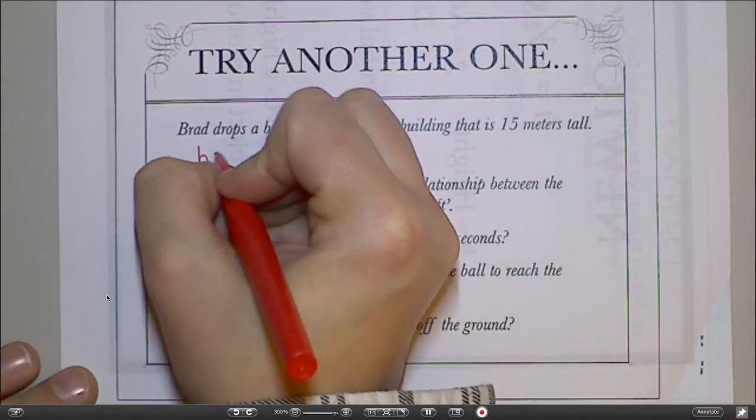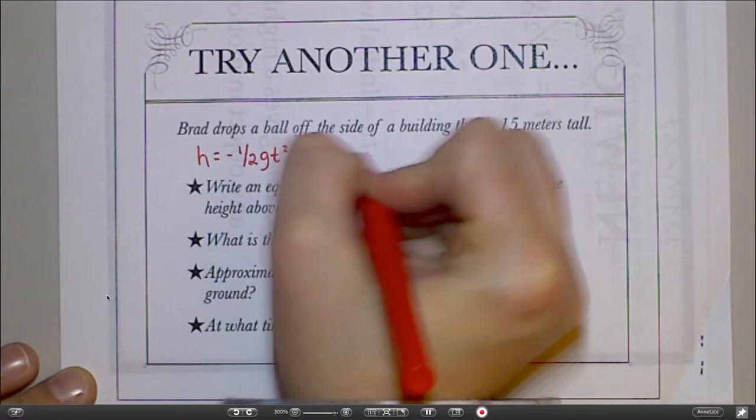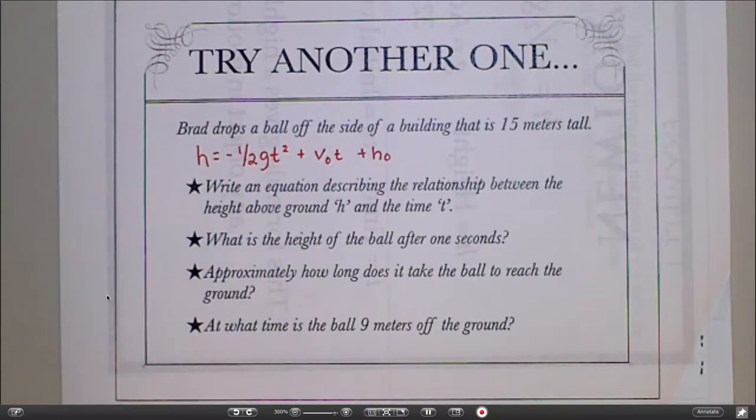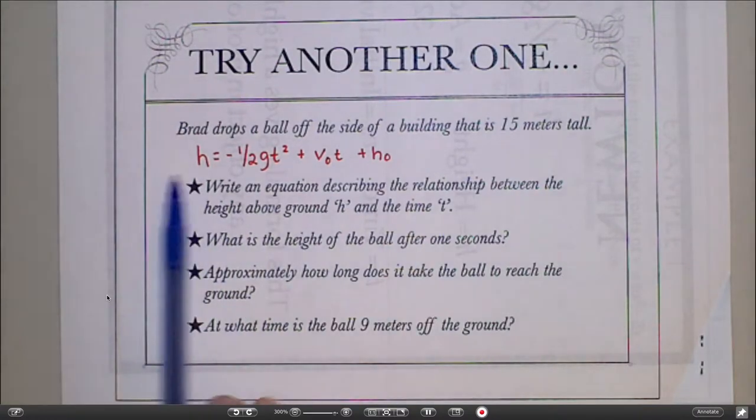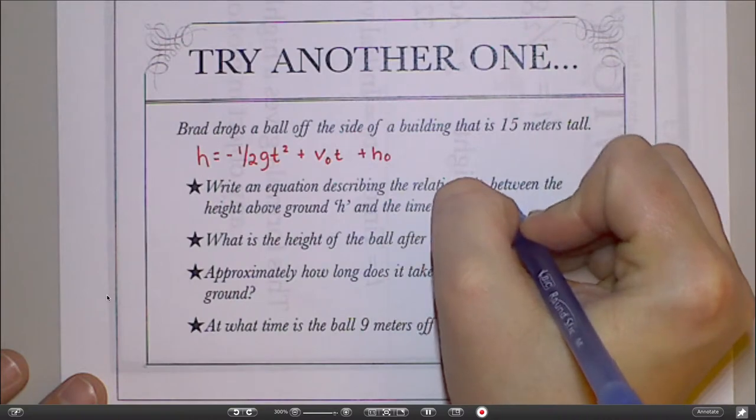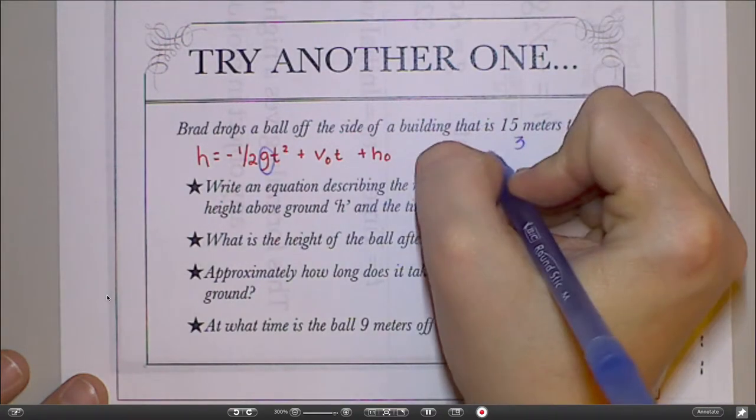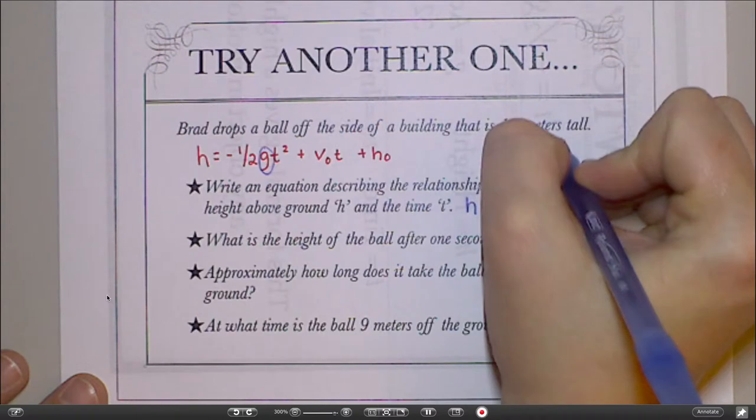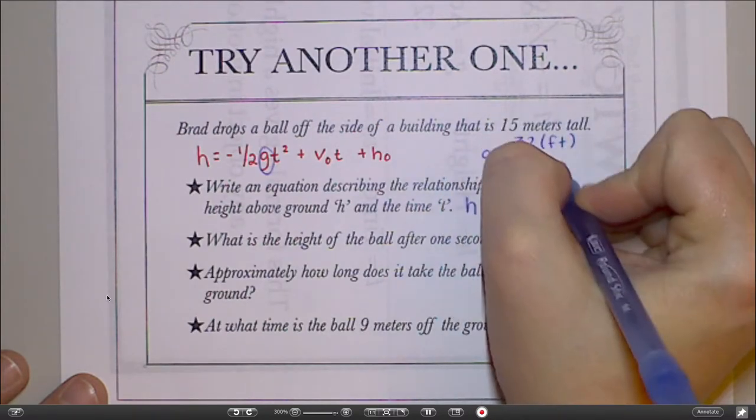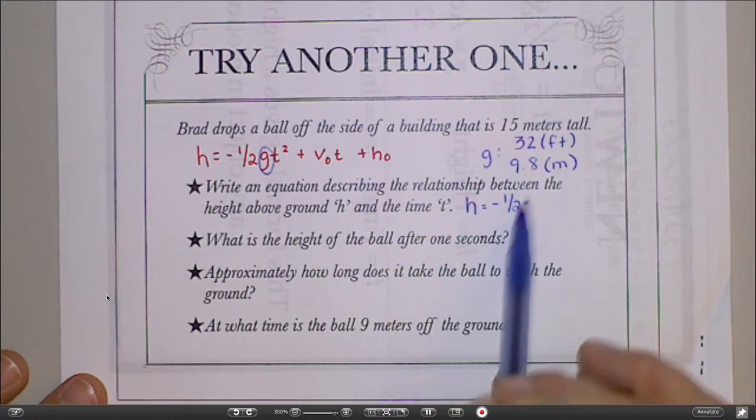So remembering that my formula looks like this, and then I'm going to plug values into that. It says write an equation describing the relationship between the height and the time, which is exactly what Newton's formula does. So don't let that throw you off. When it says write a relationship between the height and the time, that's Newton's formula. My equation is going to look like this: h equals negative one half times, remember for G, it's always going to be either 32 if you're measuring in feet or 9.8 if you're measuring in meters. So this problem is measuring in meters, so I'm going to plug 9.8 in for my G value.